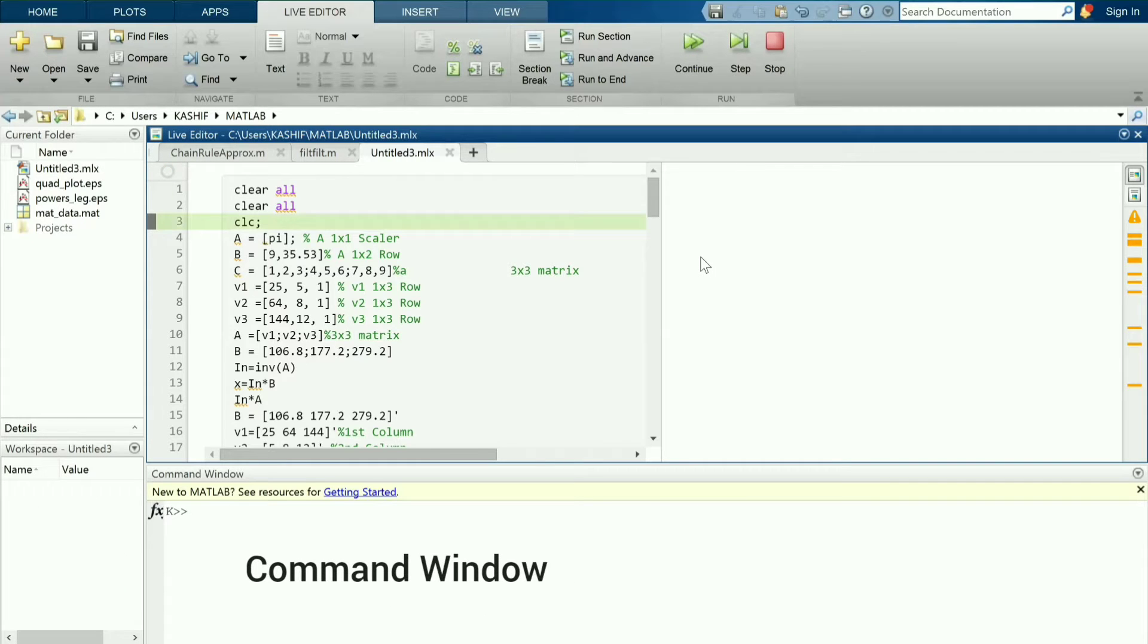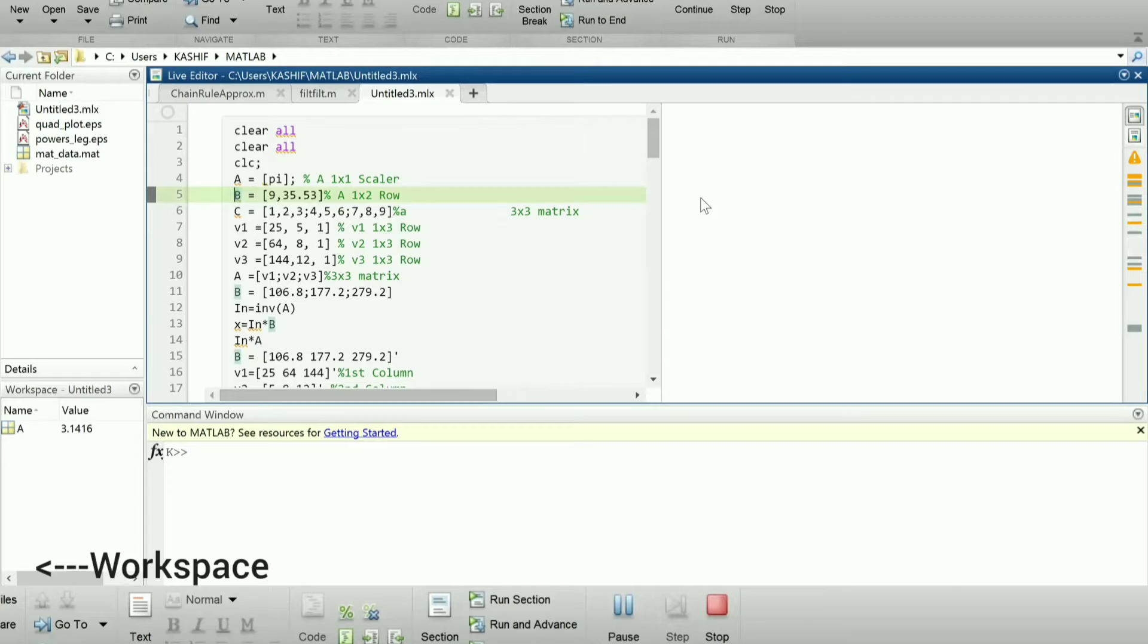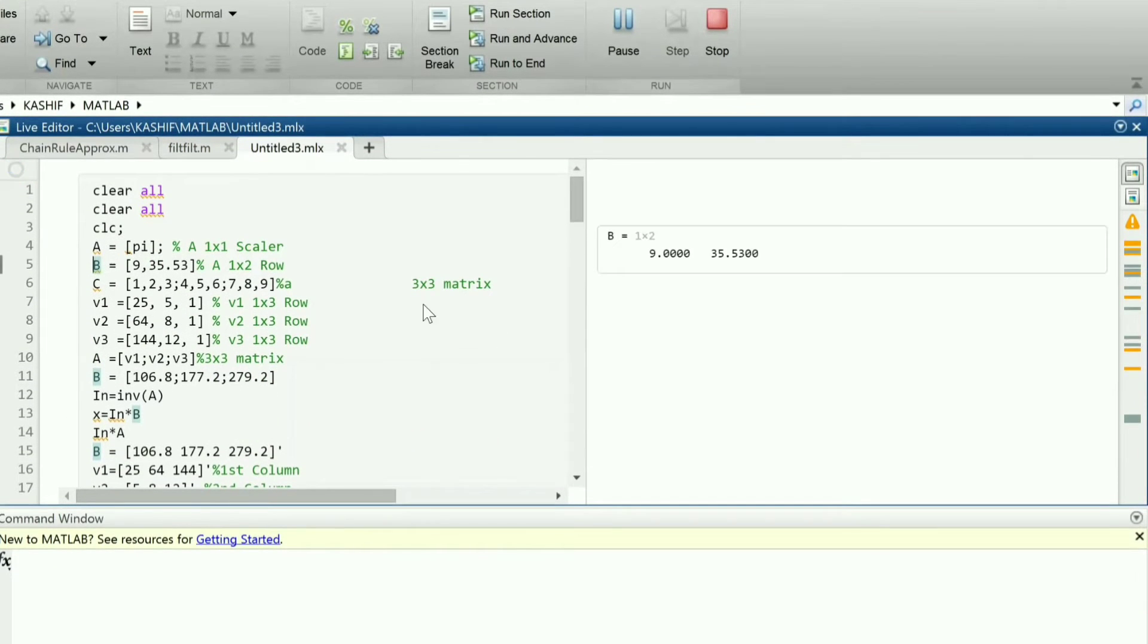In the left bottom is the workspace window where one can see the values or dimensions of the variables or matrices. Here we go with the live script. The script can be started with continue button to run the code with a single click or step button of F10 key if one wants to proceed in a step-by-step manner.